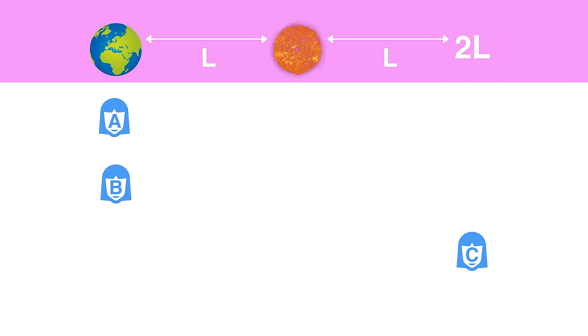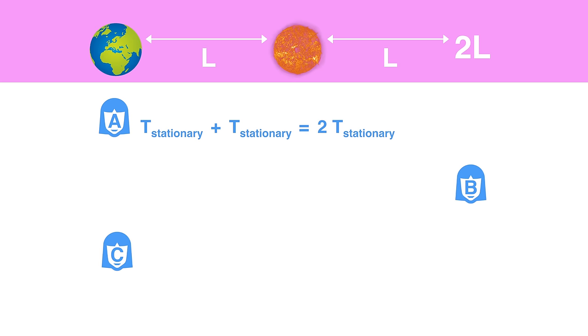Observer A uses the symbol T stationary to represent the time it takes for B to go from Earth to the star. And because C travels at the same velocity as B does, just in the opposite direction, Observer A says that C takes T stationary to go from the star to Earth. Thus, Observer A says that the total time she measures from when B passes her on the outward leg and when C passes her on the return leg to be simply 2 times T stationary.